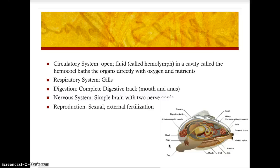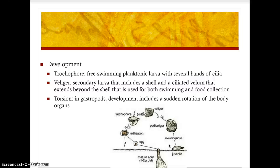The circulatory system of mollusks is an open circulatory system, unlike our closed circulatory system of veins, arteries, and heart. In an open circulatory system, the fluid called hemolymph is pumped in and out of cavities called the hemocoel. The organs directly receive oxygen and nutrients as the hemolymph is pumped into the hemocoel. The respiratory system uses gills, and they have a complete digestive tract from mouth to anus. The nervous system is a simple brain with two nerve cords.